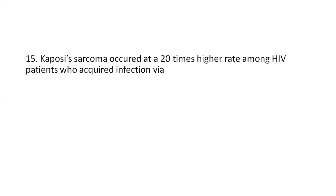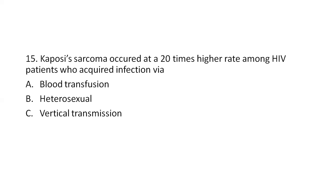Next question: Kaposi's sarcoma occurs at a 20 times higher rate among HIV patients who acquired infection via Option A, blood transfusion; Option B, heterosexual; Option C, vertical transmission; Option D, MSM. The right answer is Option D, MSM — that is, men who have sex with men. Kaposi's sarcoma is seen at a higher rate in homosexual men. Thank you.